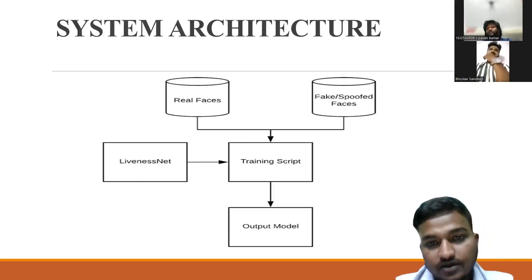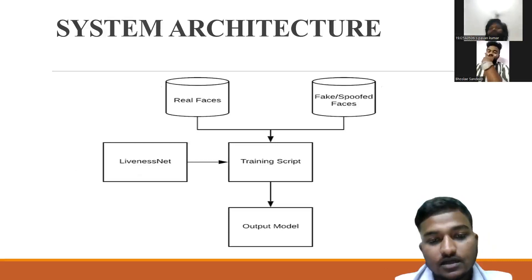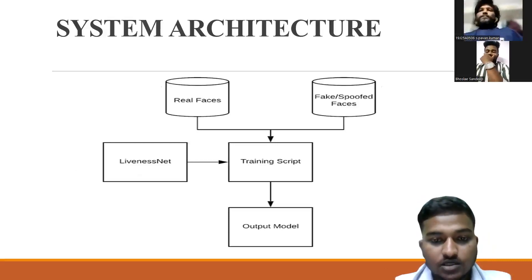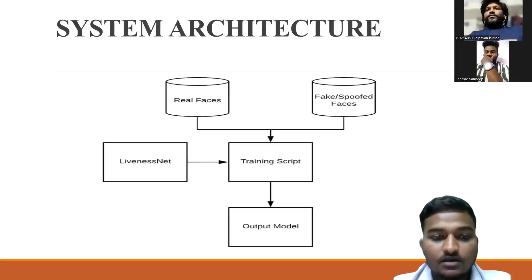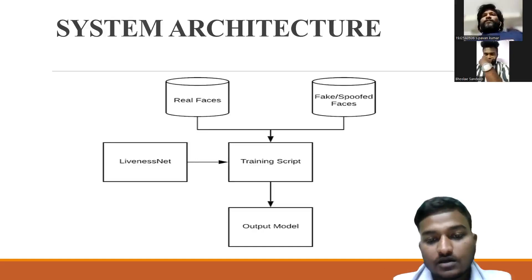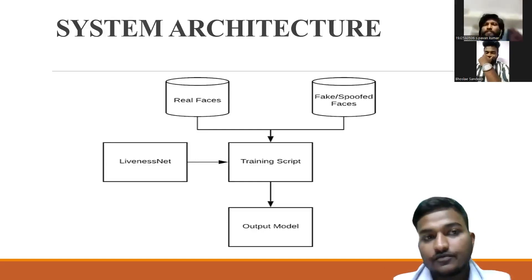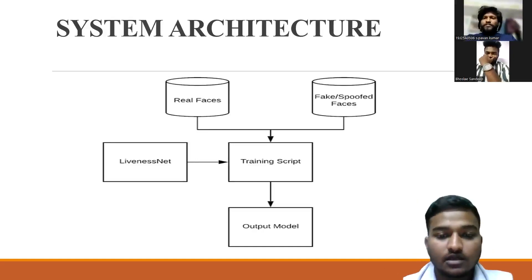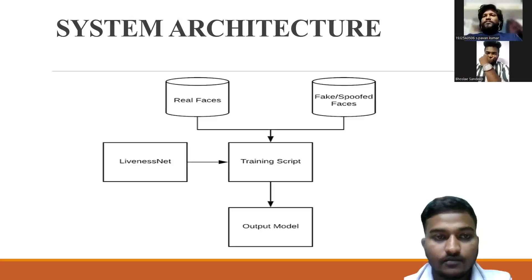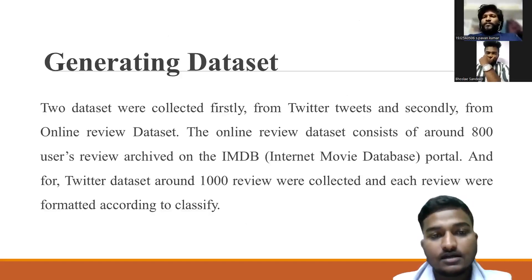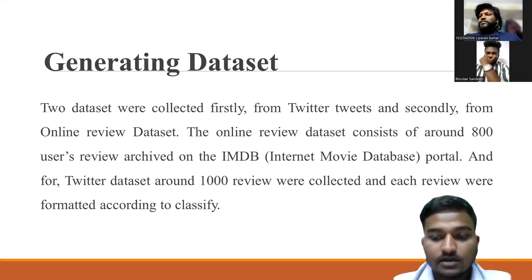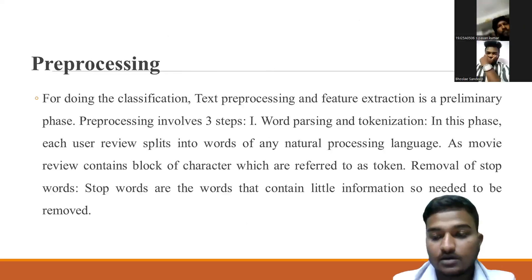After collecting the fake and whole data, liveness net helps to find out the fake and genuine reviews. Then it sends the data to the training script. After that we get the output model, which identifies which reviews are fake and which are real. First, it collects and reads the whole data given by us.